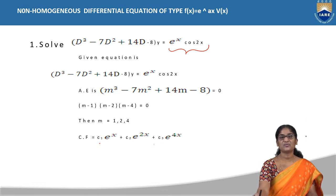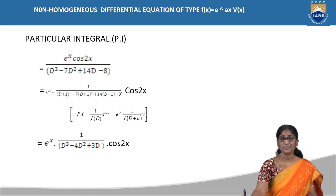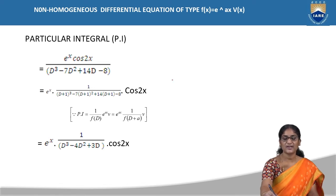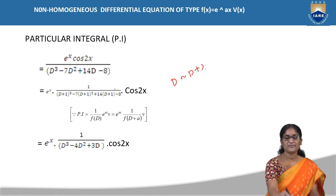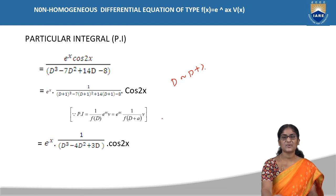Now we need to find out the particular integral. The particular integral is given by 1/f(D) into Q(x), that is 1/(D³ - 7D² + 14D - 8) into e^x · cos2x. Wherever D appears, substitute D+1. Substituting D+1, the exponential moves from the right side to the left side, giving e^x into 1/[(D+1)³ - 7(D+1)² + 14(D+1) - 8] into cos2x.